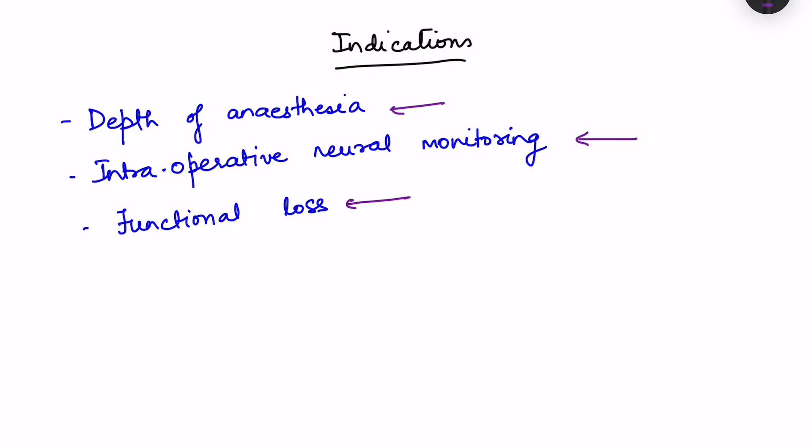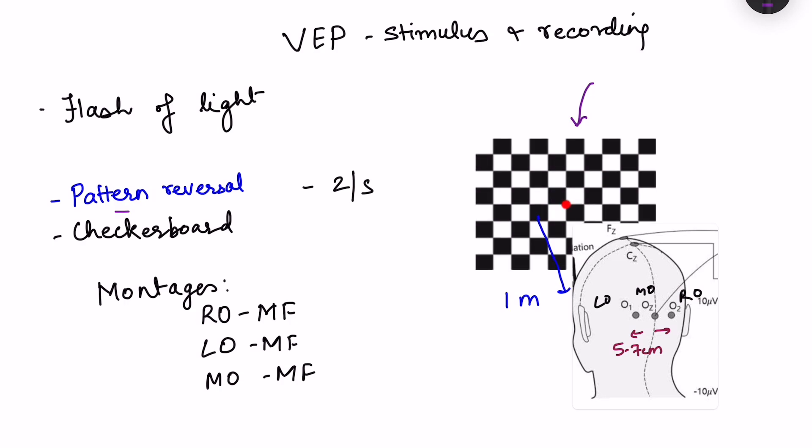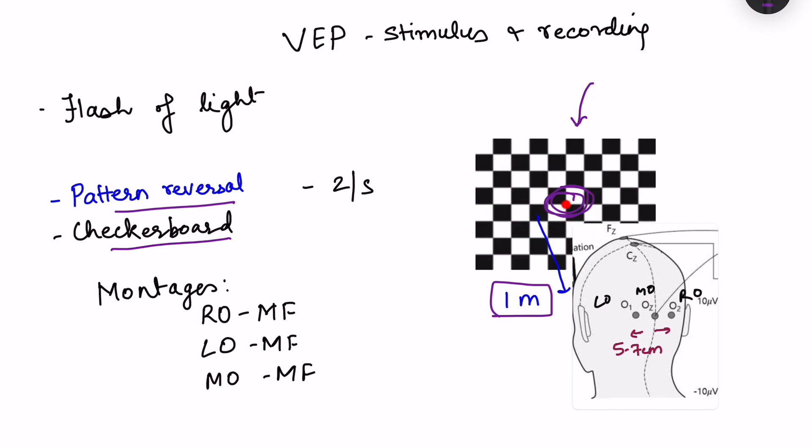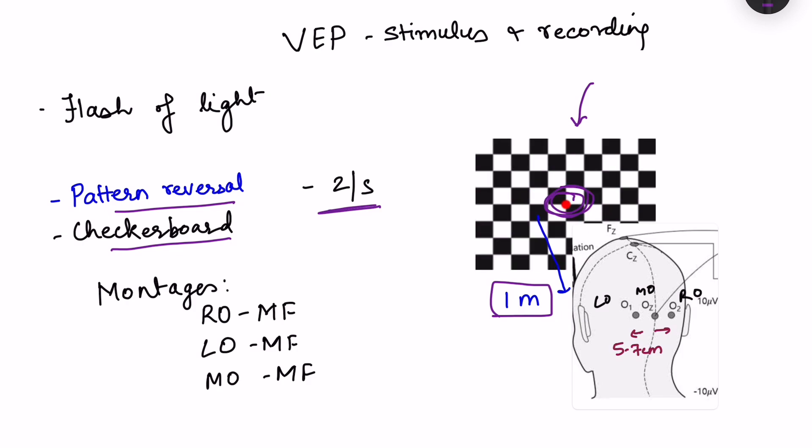Now moving on to specific evoked potential, that is visual evoked potential. In visual evoked potential recording, this is the stimulus which is commonly used. This is known as pattern reversal checkerboard. So what we are doing is there is a pattern reversal of white and black patterns. The person is made to sit at a distance of one meter from this checkerboard and one eye is stimulated at a time. So one eye is closed and the person is asked to target on the central portion of this checkerboard. And there is pattern reversal of this at approximately 2 per second. So every 500 millisecond this pattern is changing.